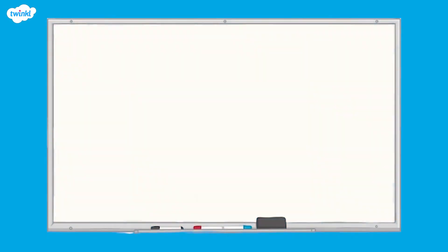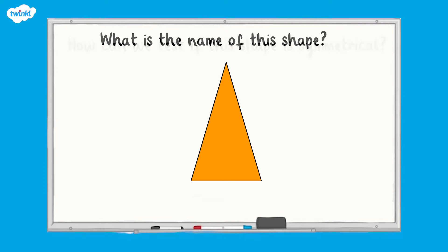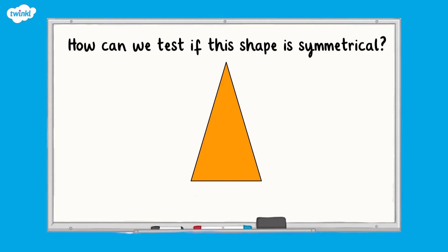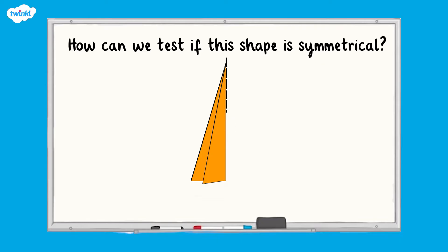Look at this shape. It's an isosceles triangle, as it has two equal sides and two equal angles. How could we test if it's symmetrical? Well, if we draw the shape on a piece of paper, we can fold it in half to test if the shape is symmetrical. If the two halves of the shape match perfectly, then the crease that we have folded along is a line of symmetry.